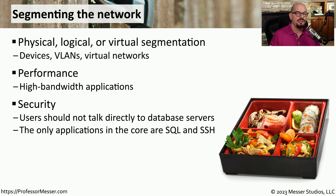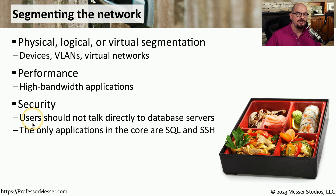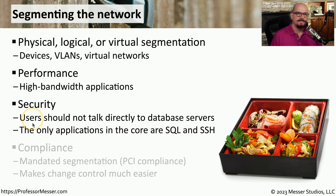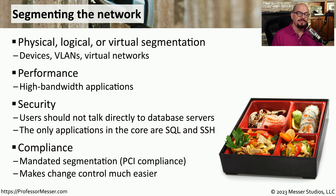Sometimes our segmentation is very strategic, especially from a security perspective. For example, you might have a rule that says users should not be communicating directly to a database server. Instead, they should be communicating to an application server, and that application server should be communicating to the database server. In this situation, a firewall or access control list would limit who has access to a particular server. Some segmentation is also required due to mandates or policies — for example, PCI compliance (the payment card industry) may require that credit card information be kept completely separate from any other part of your network.